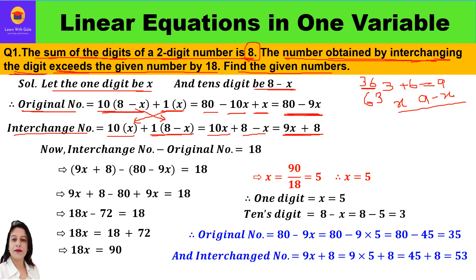The problem says the interchange number exceeds the given number by 18 — that means their difference is 18. The interchange number is 9x plus 8 and the original number is 80 minus 9x. So we set up the equation: (9x plus 8) minus (80 minus 9x) equals 18.